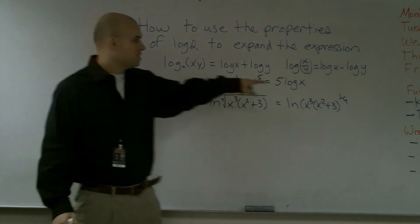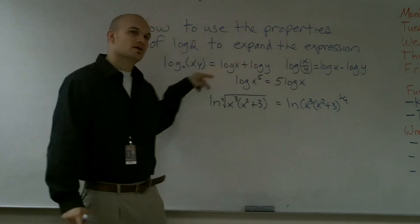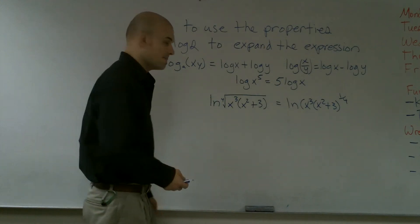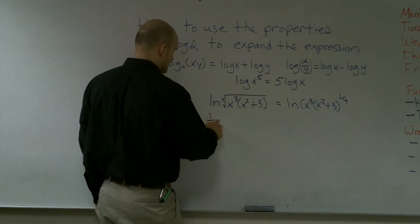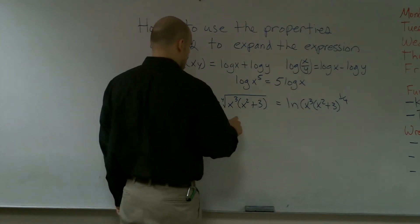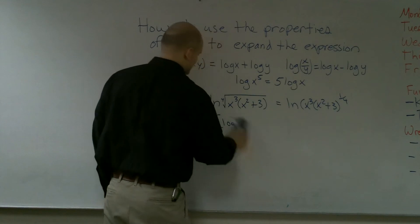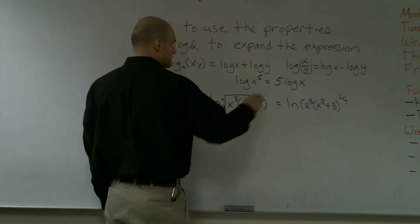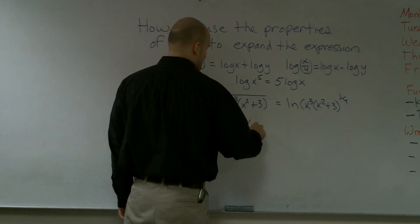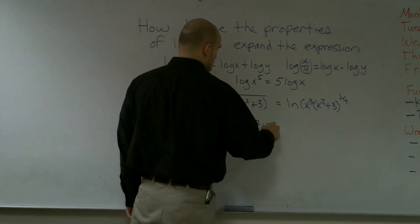Now, using this property, I know I'm going to put this one-fourth to the front. So now we're actually going to have to start using some brackets. So now I have one-fourth ln of x cubed times x squared plus 3.